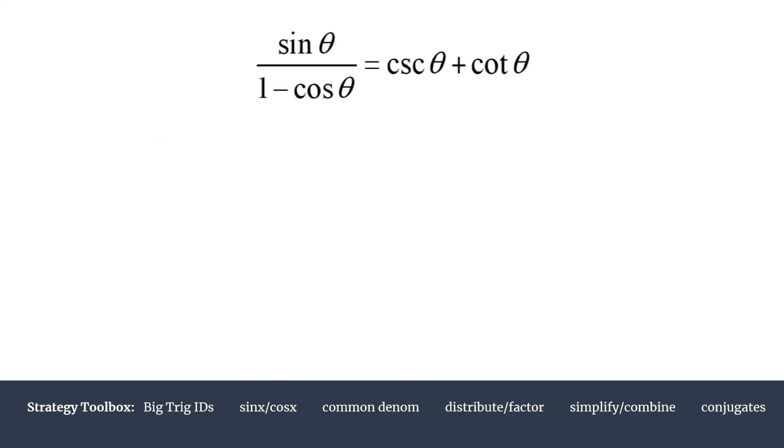As with any trig verification, we want to decide which side to work on first and strategize before we actually jump in. Both sides look relatively complex, but because I see the one minus cosine in the denominator of the left hand side term, that's where I'm going to try working first. That's not to say you couldn't work on the right side — there are many acceptable solutions for verification.